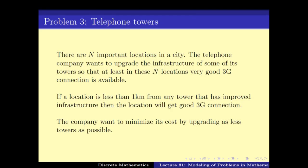Let's try to solve the telephone tower problem from the last video. We have N important locations and we want to ensure all of them have 3G network. To do that, we need to upgrade some towers, and every one of the N locations must be within a distance of less than 1 km from at least one upgraded tower. It is an optimization problem because we want to minimize the number of towers we upgrade.